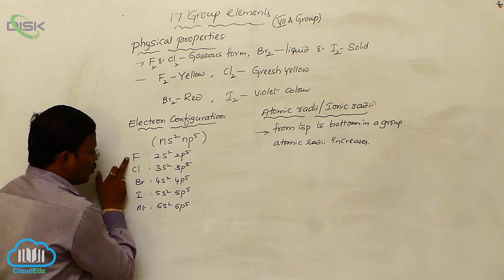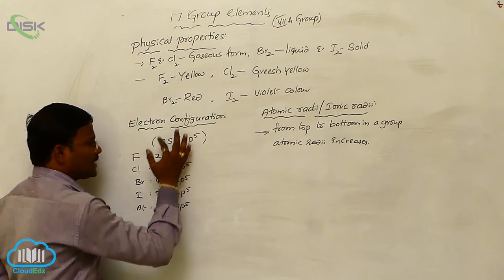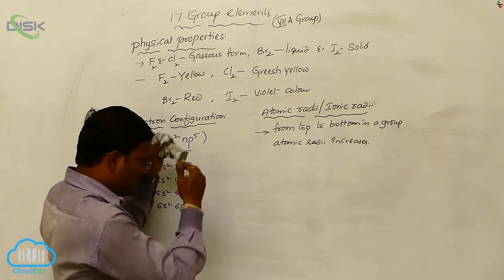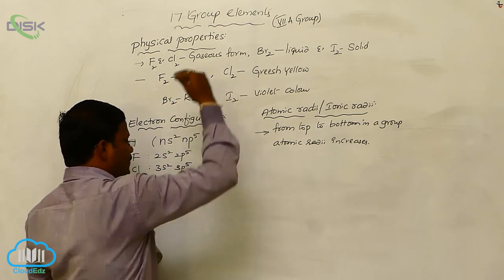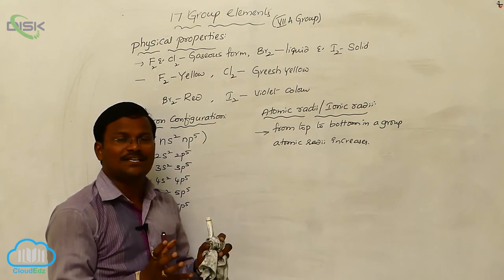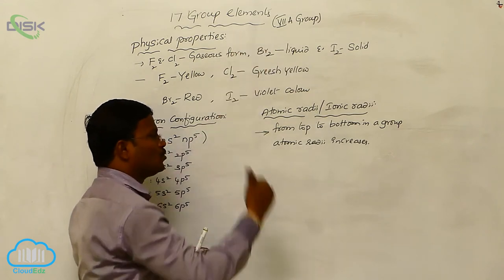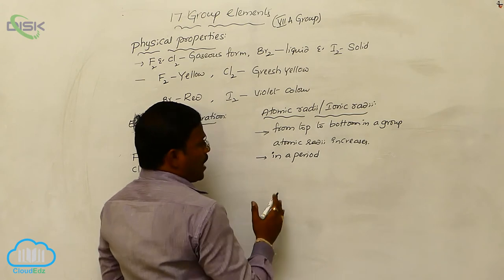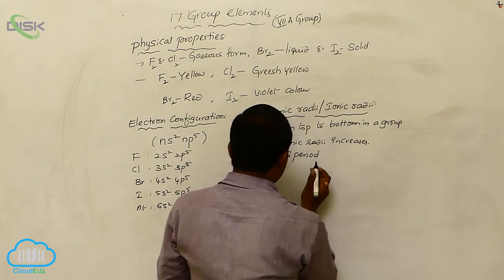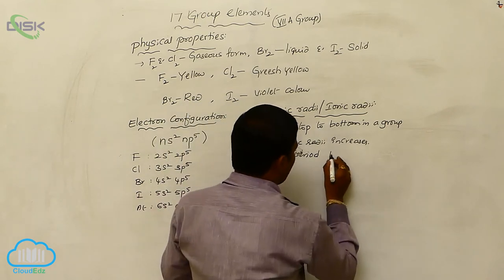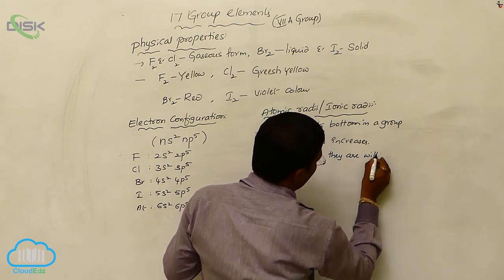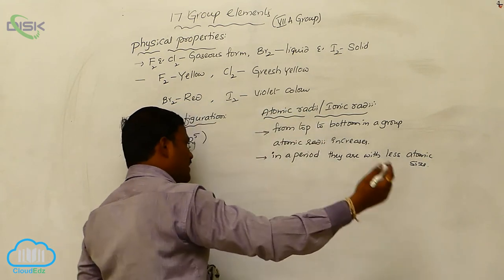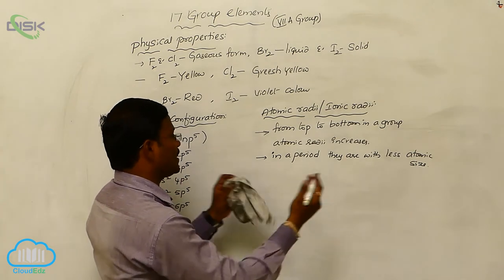Why does atomic size or atomic radii increase from top to bottom? In fluorine, only 2 shells are present around the nucleus. But in chlorine, 3 shells are present. In bromine, 4 shells. In iodine, 5 shells. Because of this, from fluorine to astatine, by increasing number of valence shells, the atomic size increases in a group from top to bottom. Similarly, in a period, since halogens are at the right end of the periodic table, they have less atomic size compared to the remaining elements in that period.